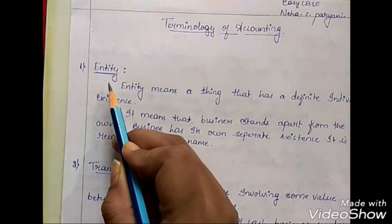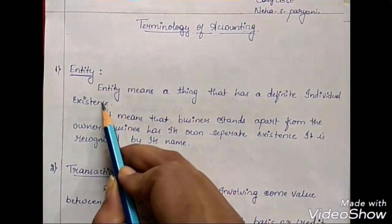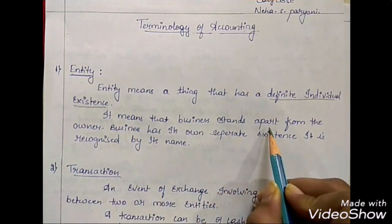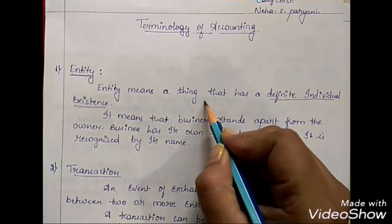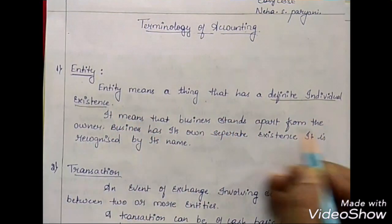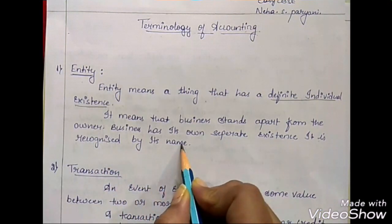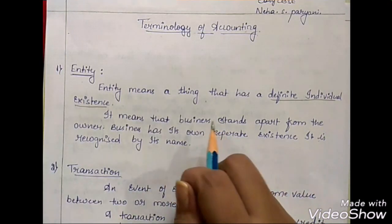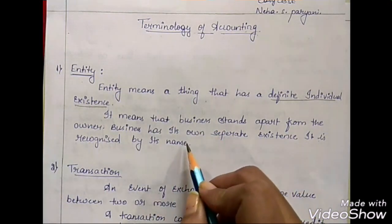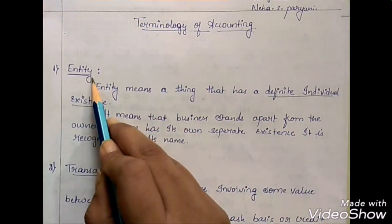First is entity. Entity means a thing that has a definite individual existence. It means that business stands apart from the owner — the business has its own separate individual existence. Business has its own legal existence and is recognized by its name, not by the name of the owner. So business has its separate legal entity.